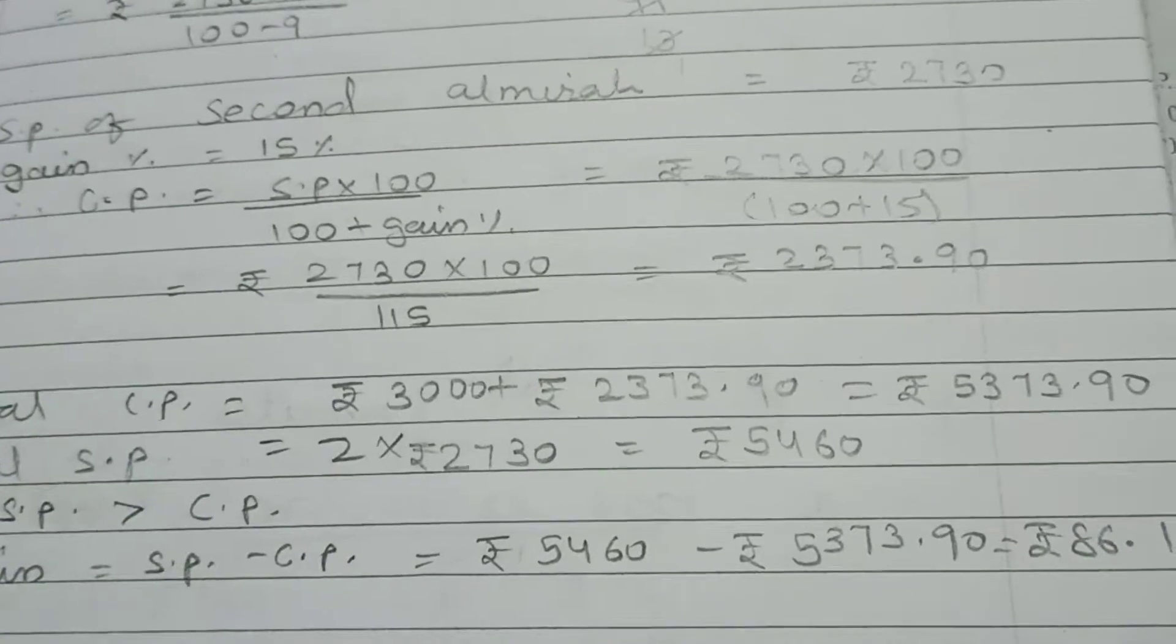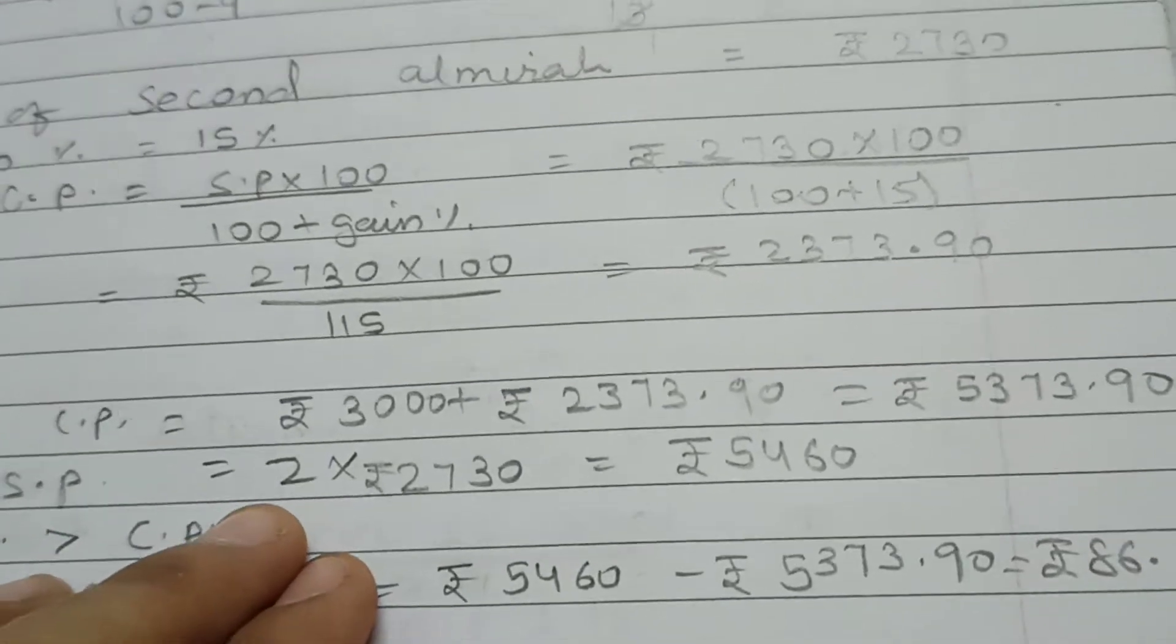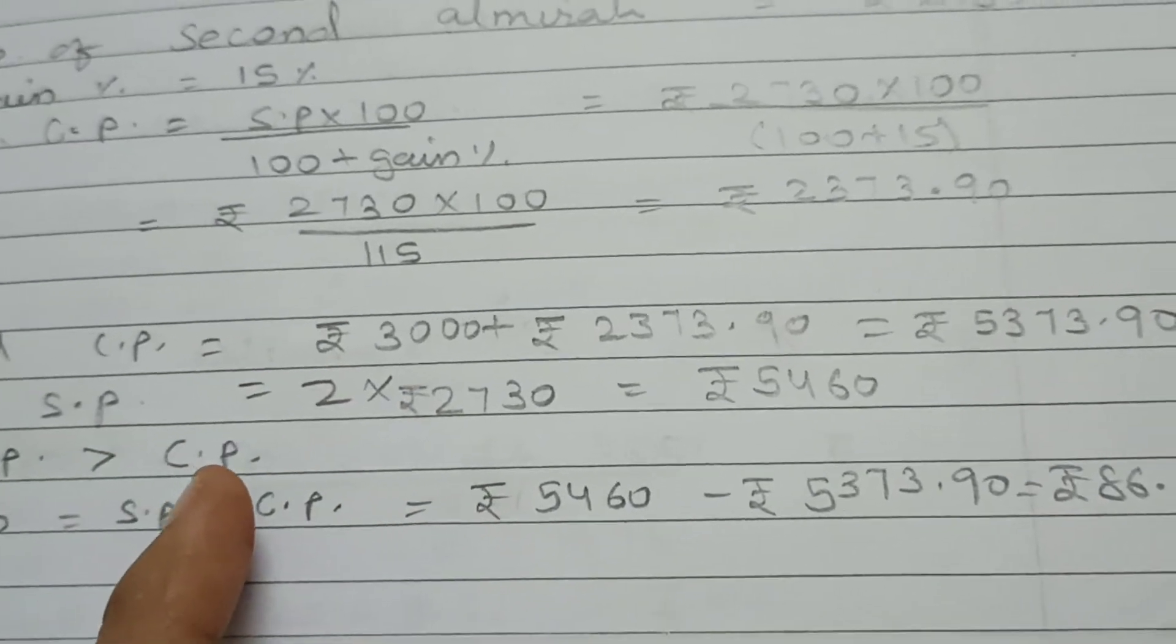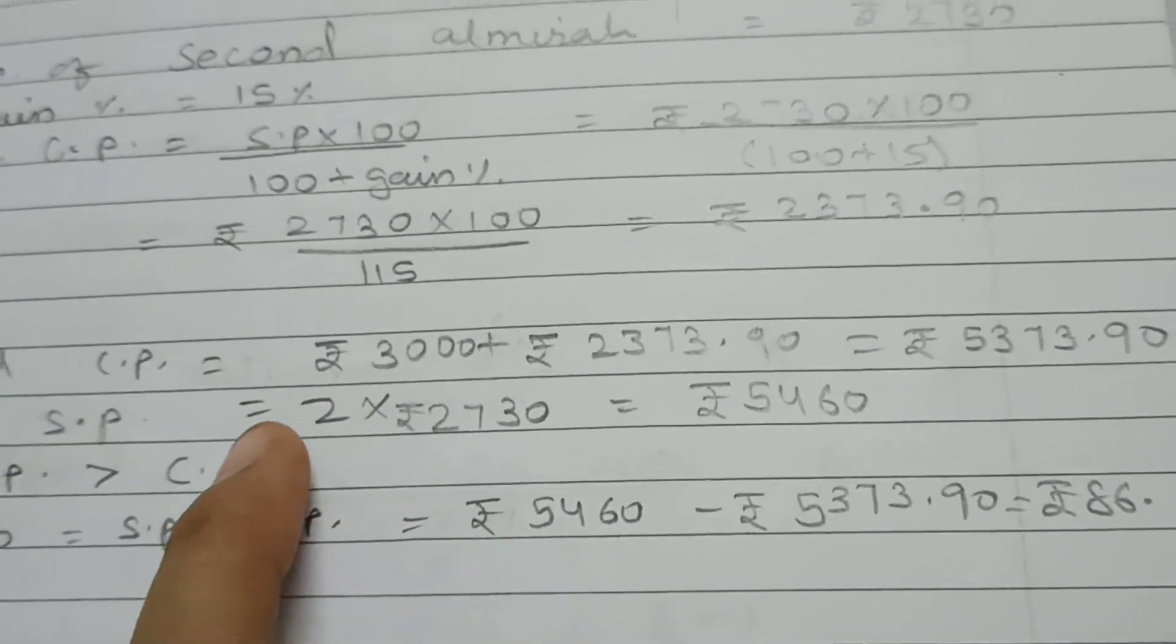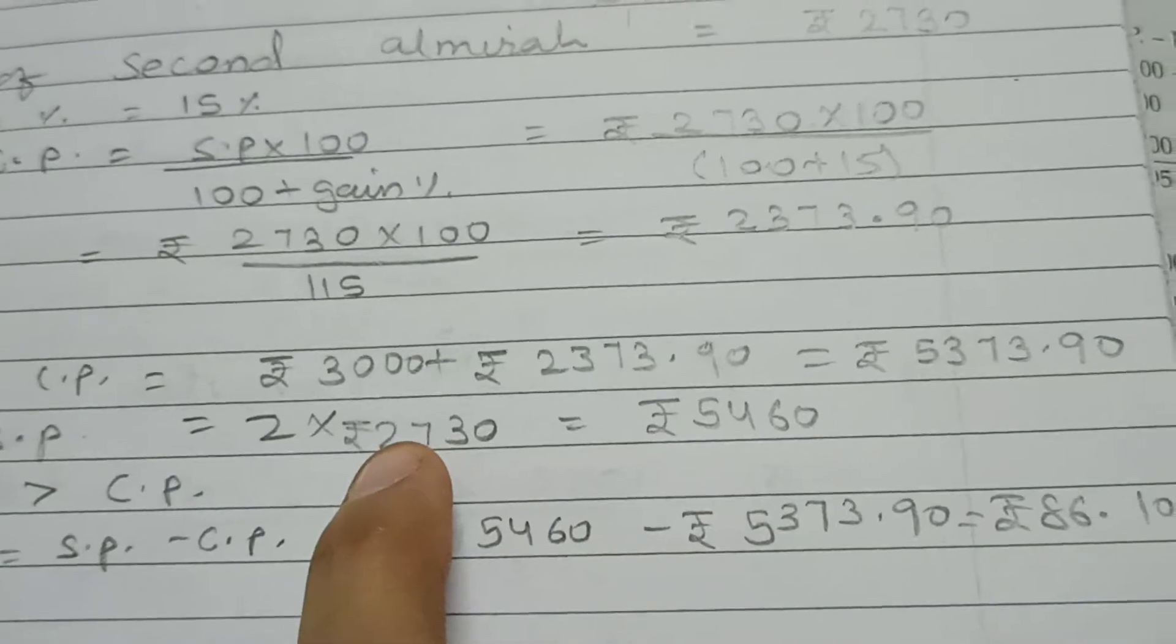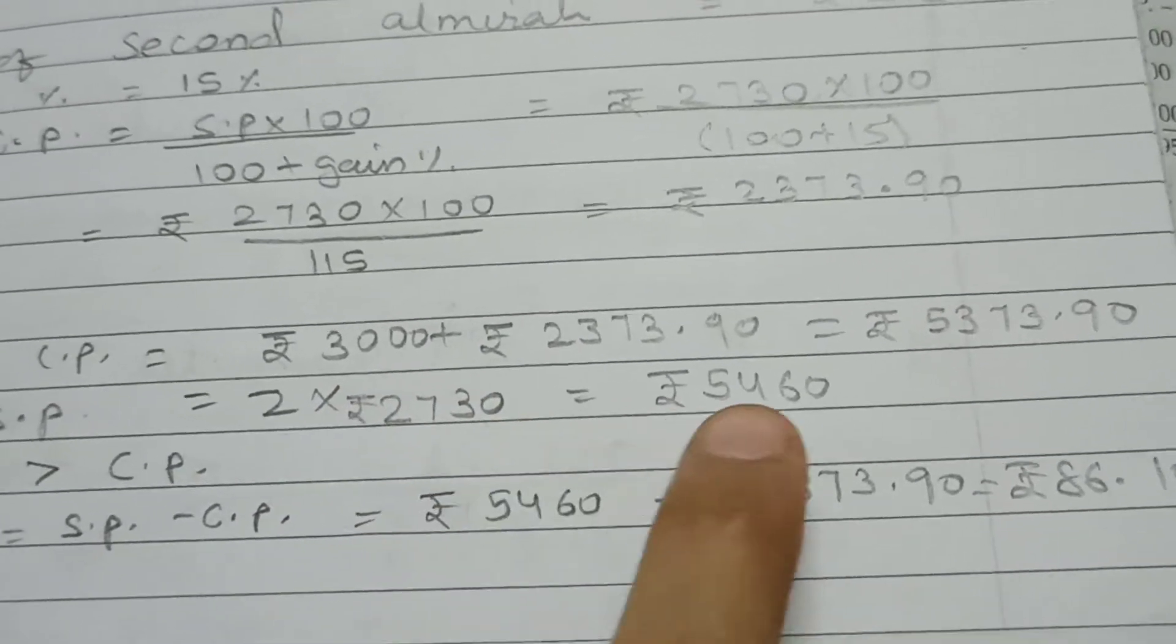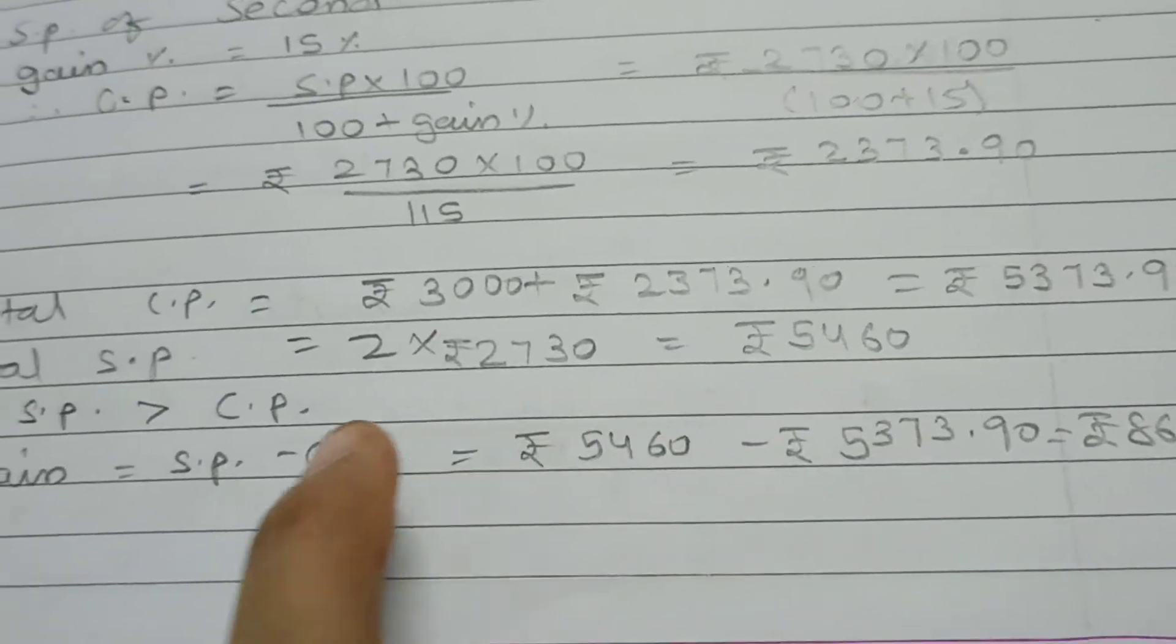Total SP, when both were sold, for how much did he sell them? 2730 for one, 2730 for the other. So, total SP is 2 multiplied by 2730, that is 5460.